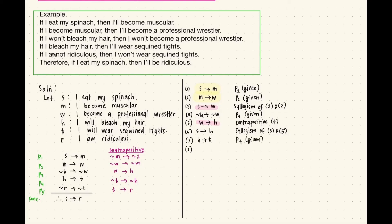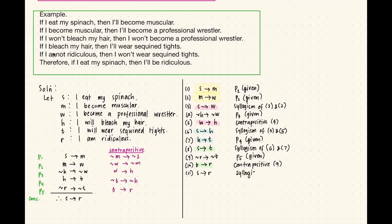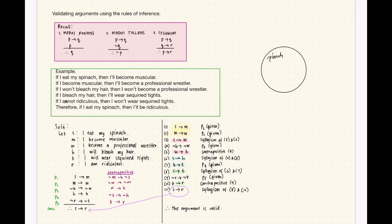Next is p4: h → t (statement 6). By syllogism with statement 5 (s → h) and statement 6 (h → t), we get s → t (statement 7). Finally, from p5 we have ¬r → ¬t. I want to connect with t, so I take its contrapositive: t → r (statement 8). By syllogism of statements 7 and 8, we conclude s → r (statement 9), which is exactly our conclusion. Therefore, the argument is valid.